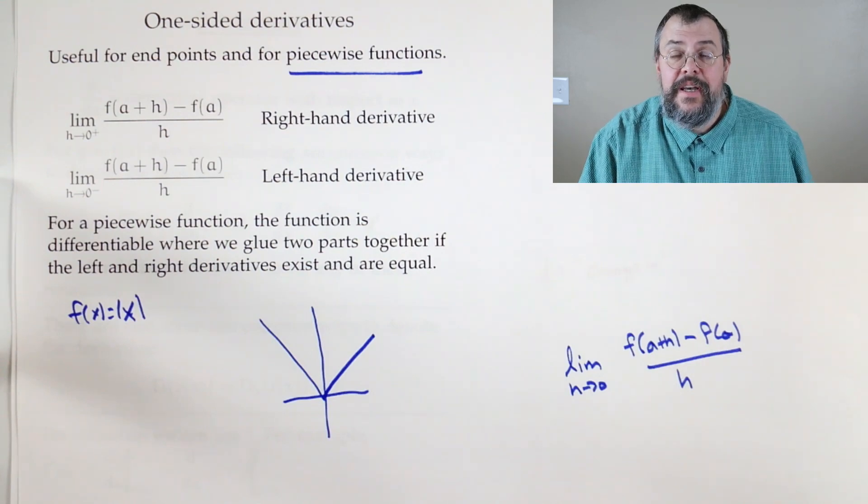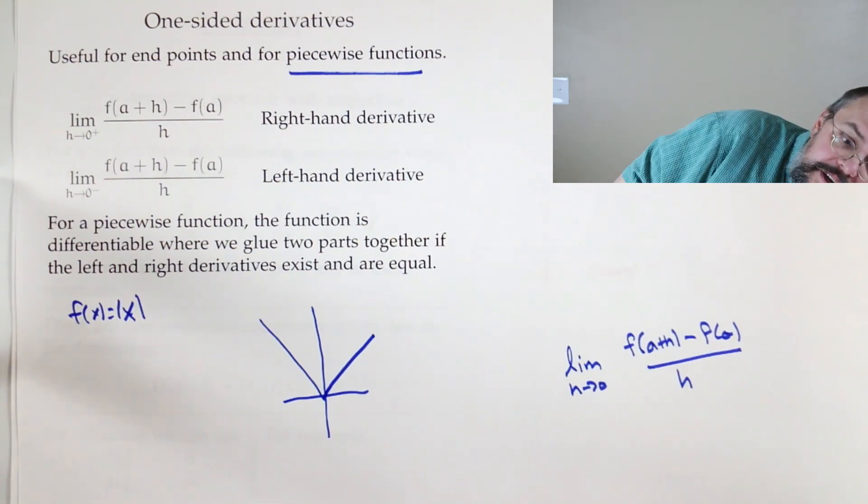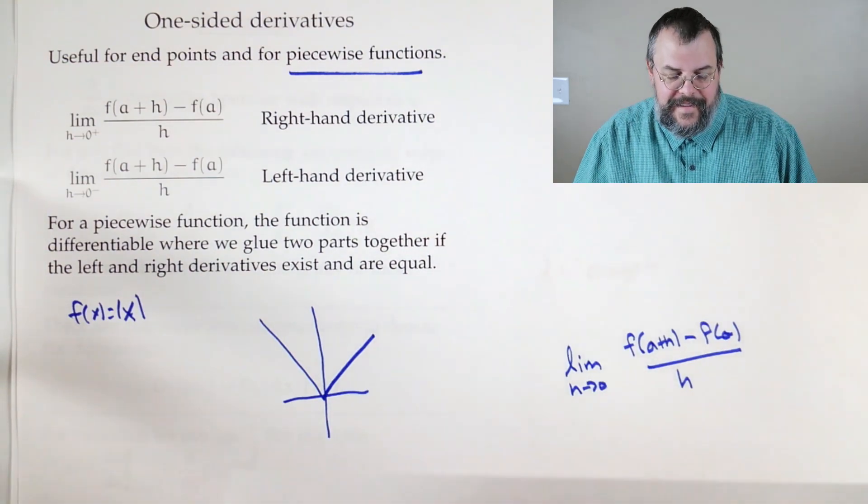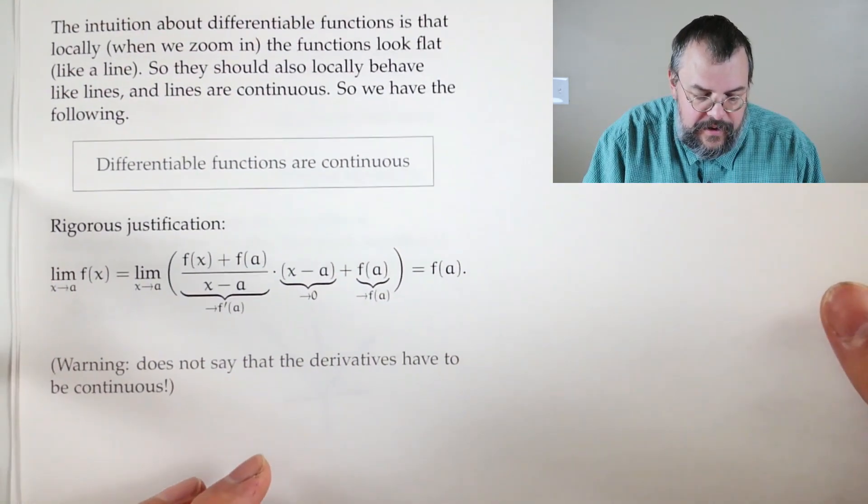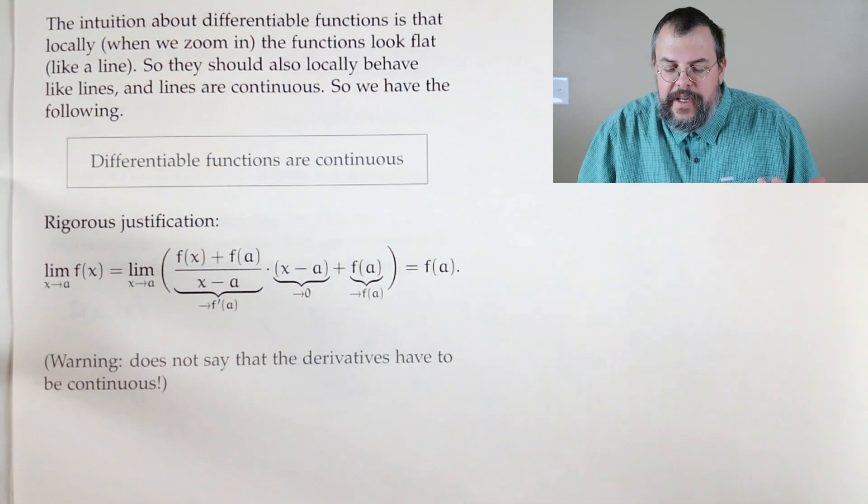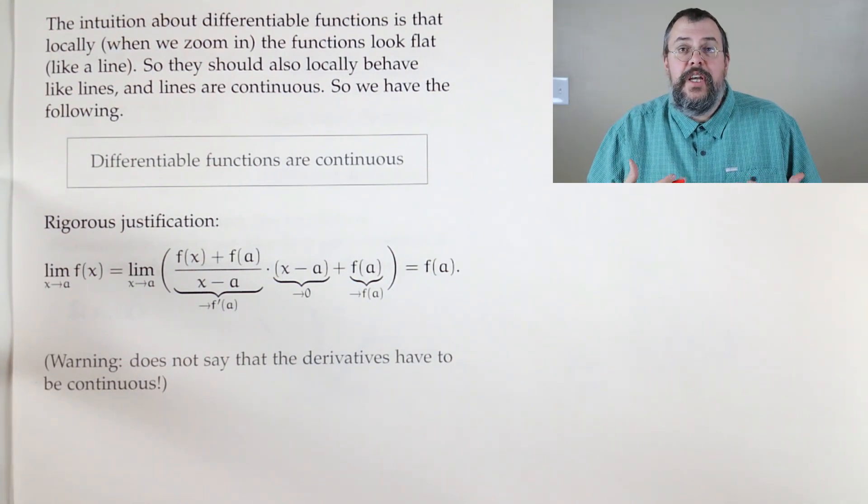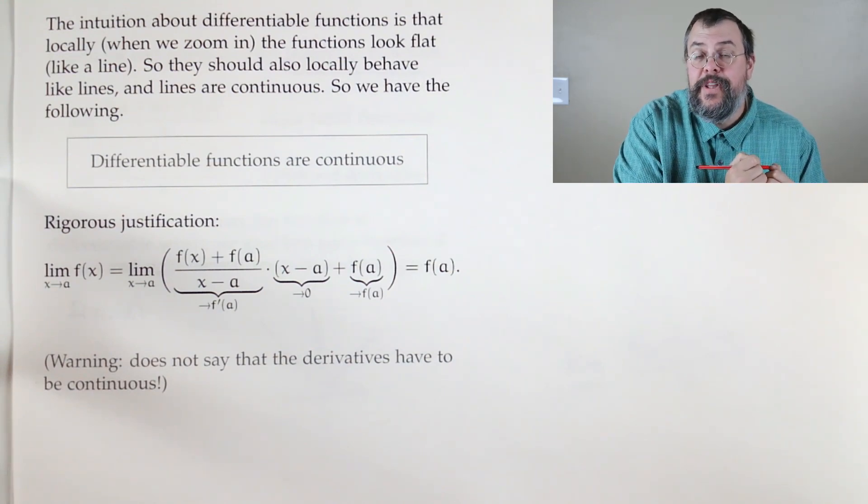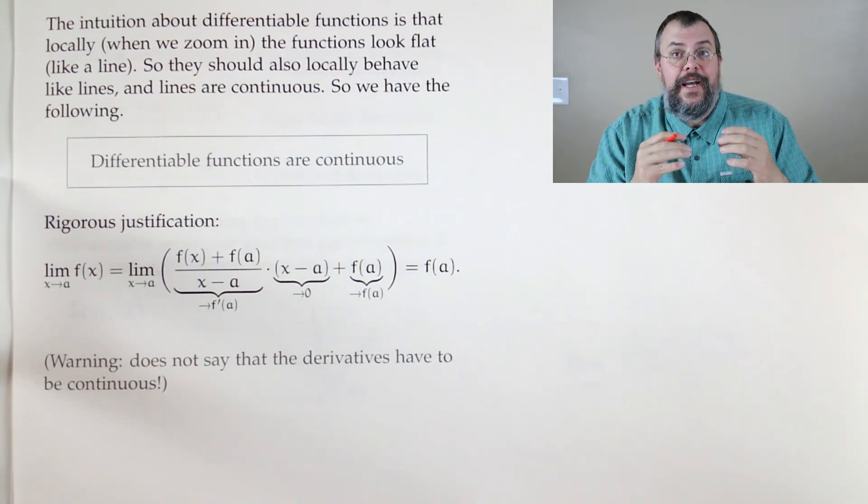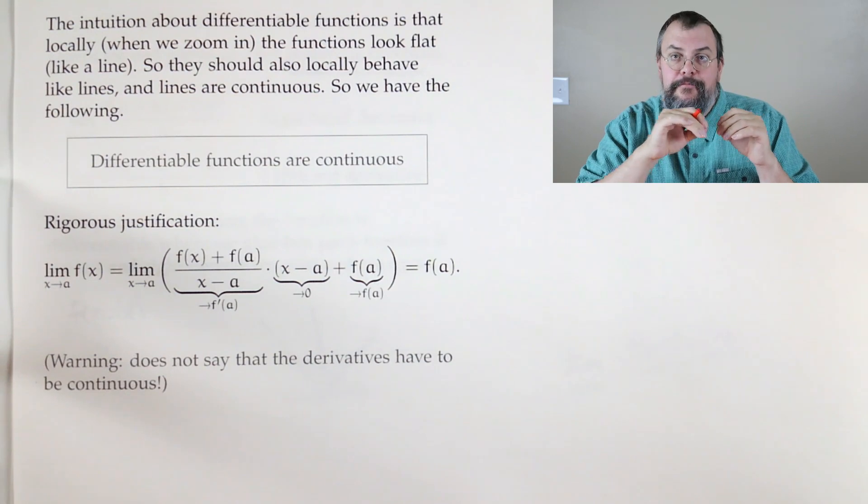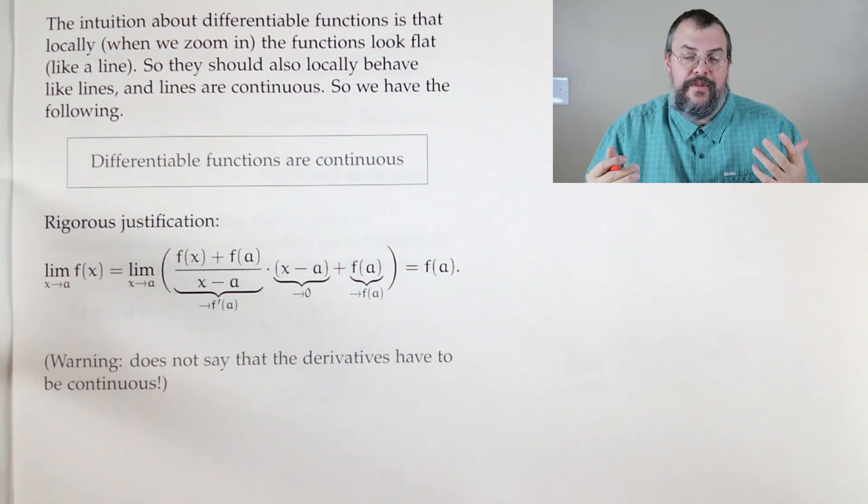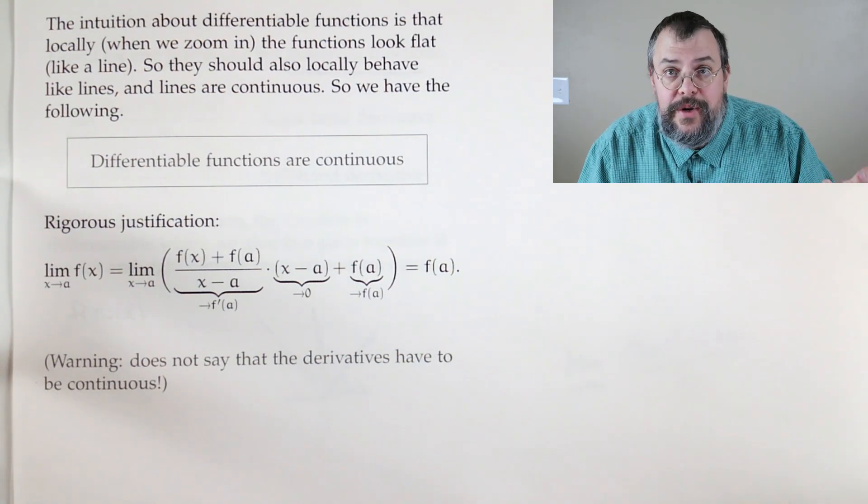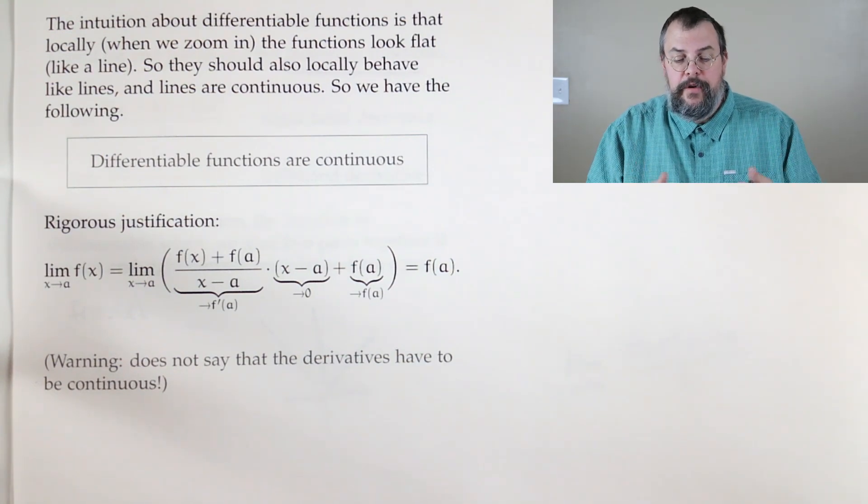I did say you have to be continuous, in order to be differentiable. So why is that? Okay. There's this nice, fun fact. Sort of our intuition should say, if I'm differentiable, I look like a line. What does a line do? A line looks flat, and it looks unbroken. It looks continuous. And so that's sort of our heuristic, intuitive argument about why that must be true.